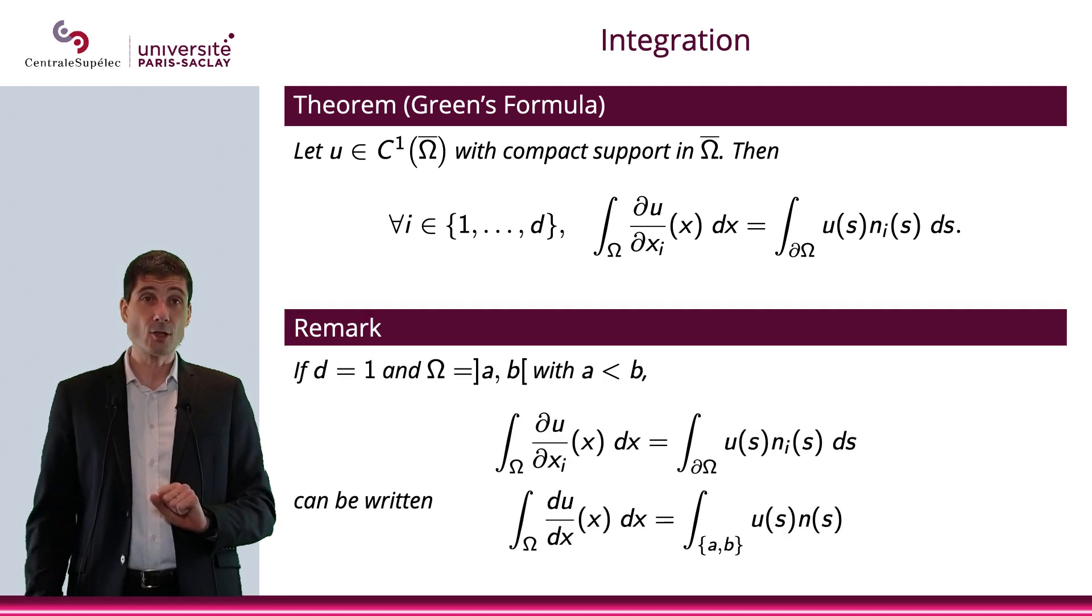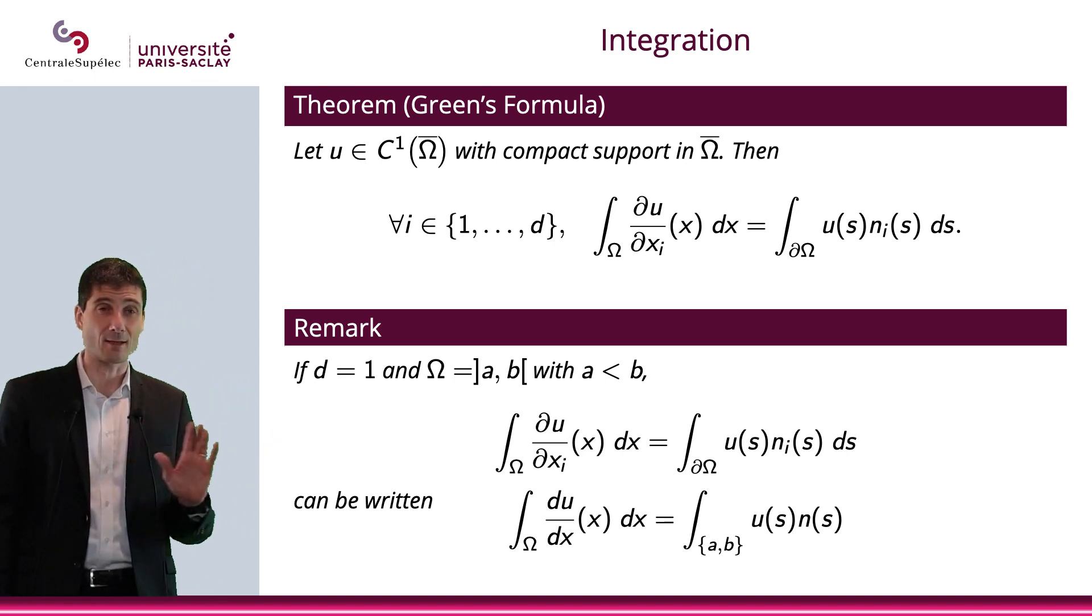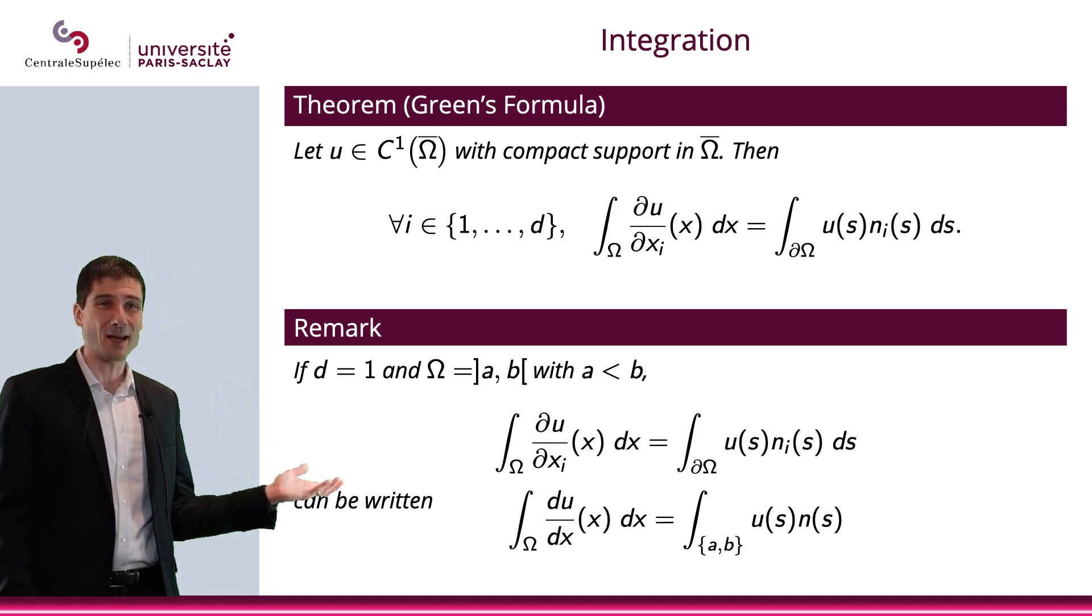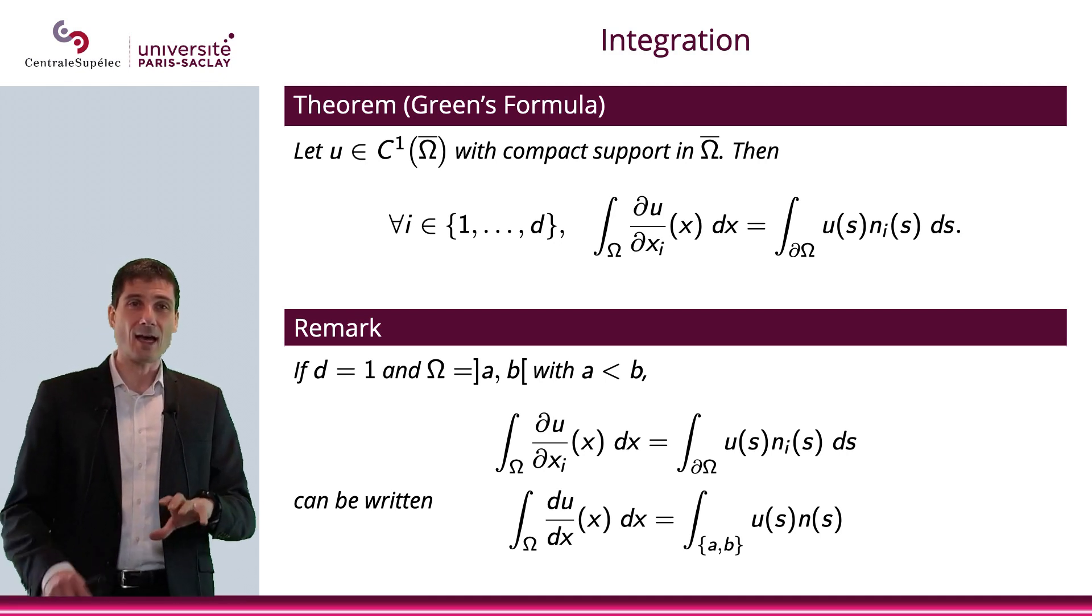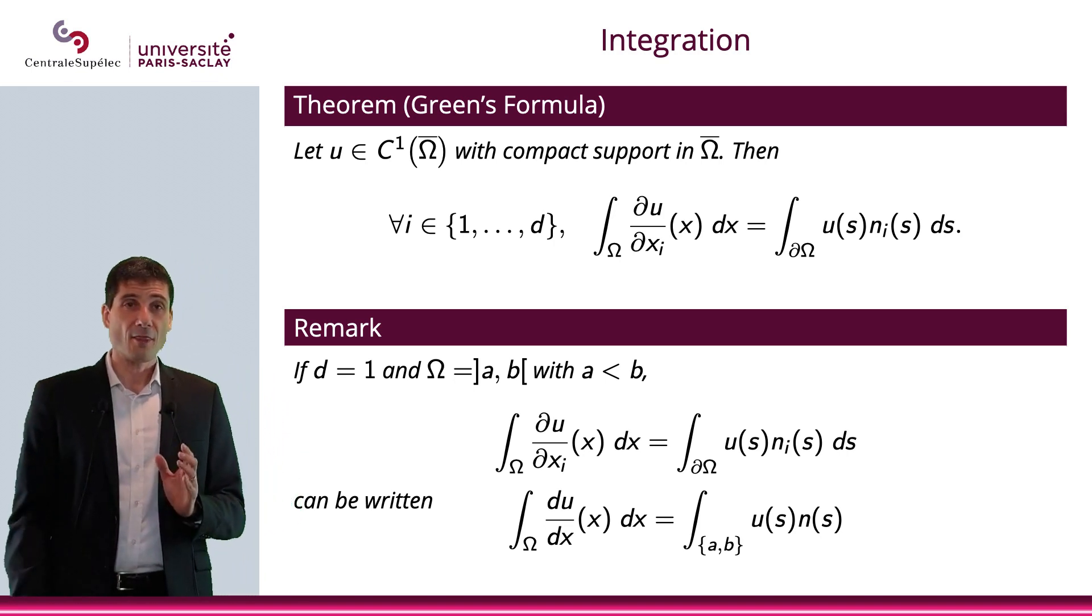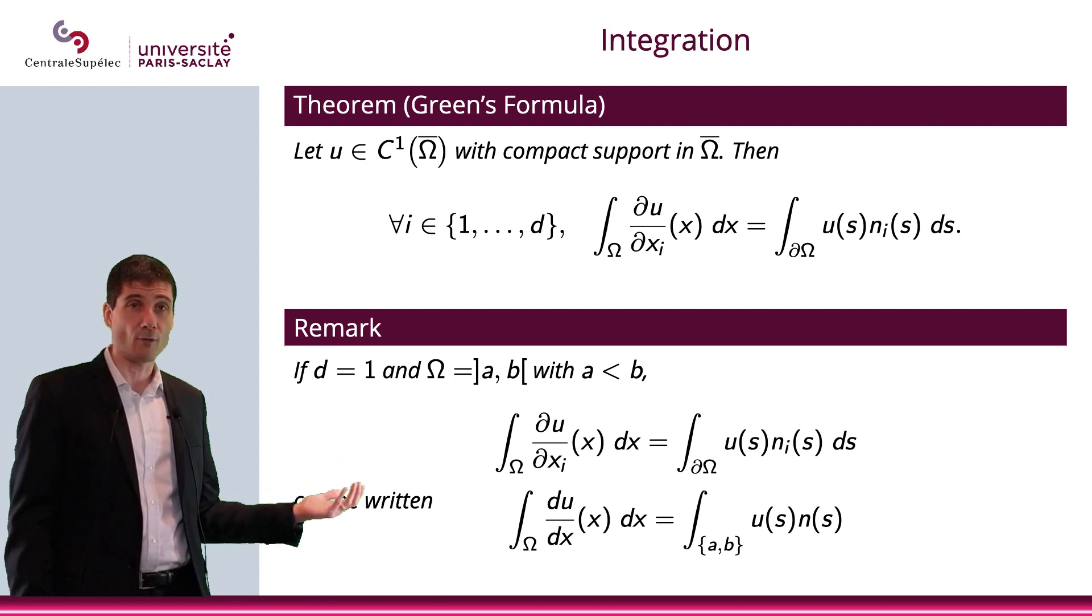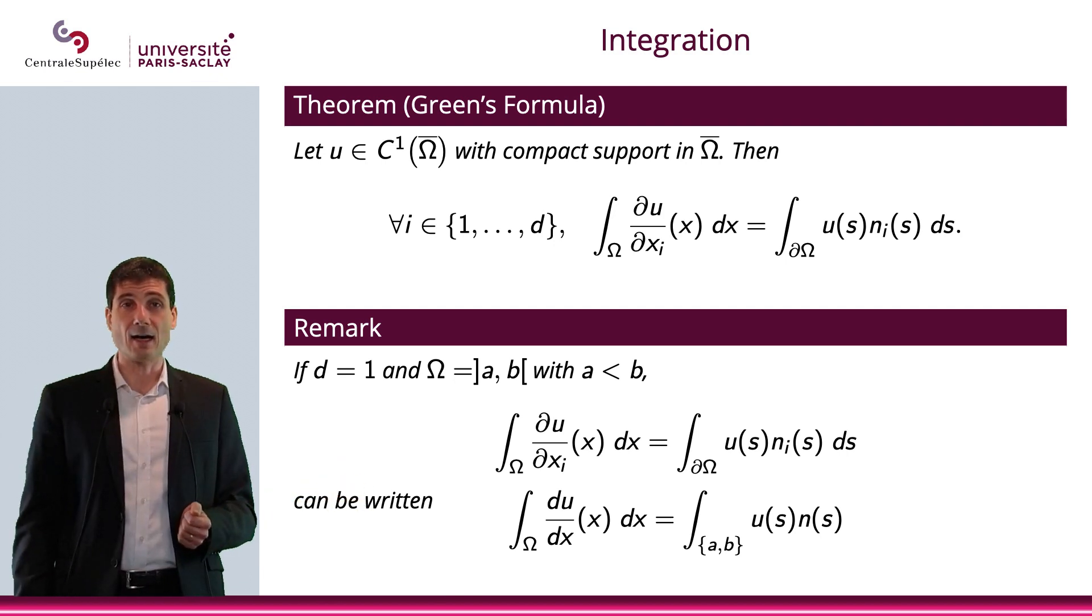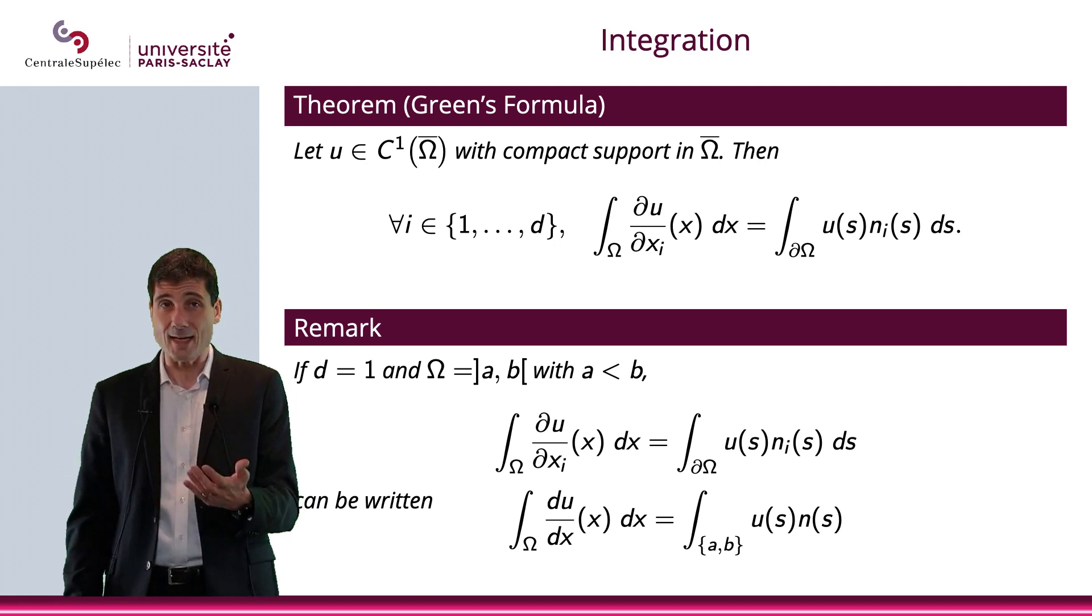Now, I would like to just point something out, which is obvious, but I'm going to point it out anyway. If d is equal to 1, and if Ω is the interval [a,b], with a smaller than b, then what is the integral over Ω of ∂u/∂x_i? Well, obviously, we only have one variable here, so dx_i is just dx. So what is the partial derivative? It's just a derivative in this case.